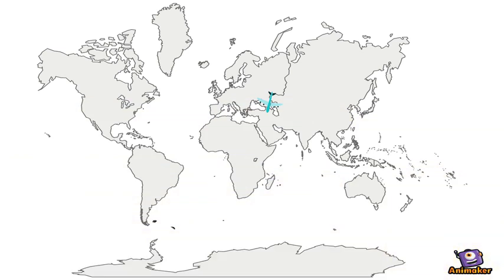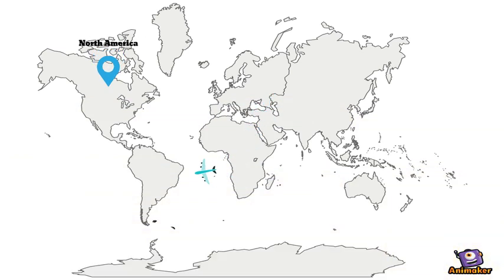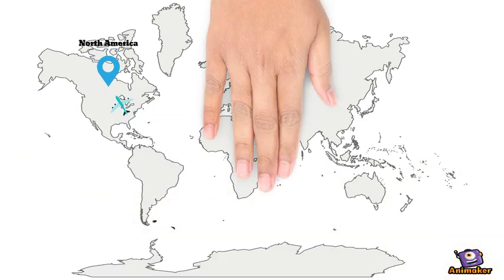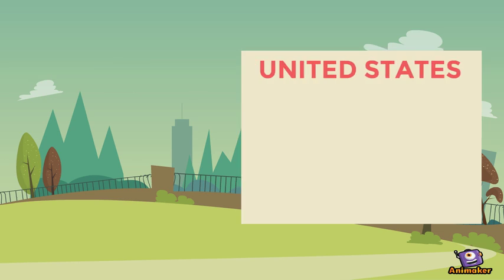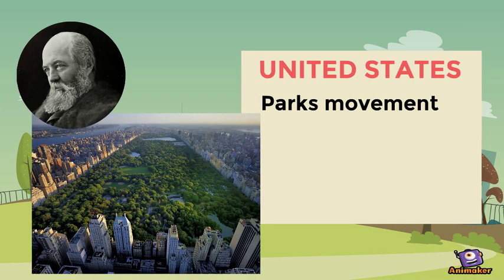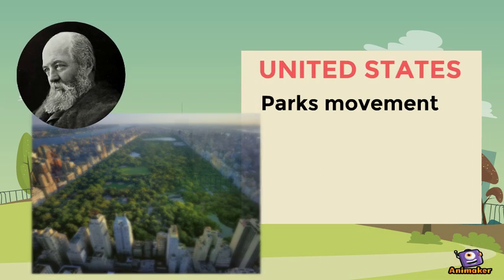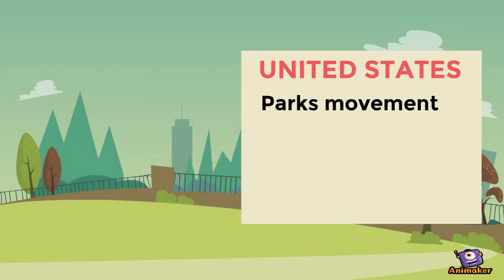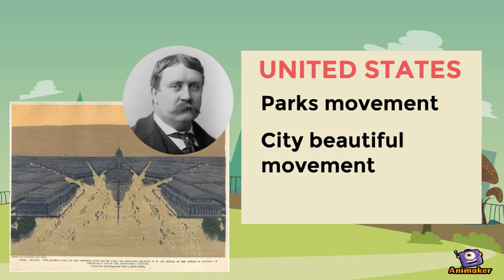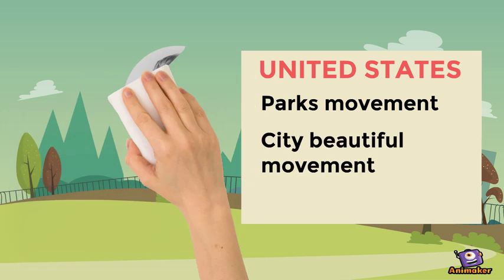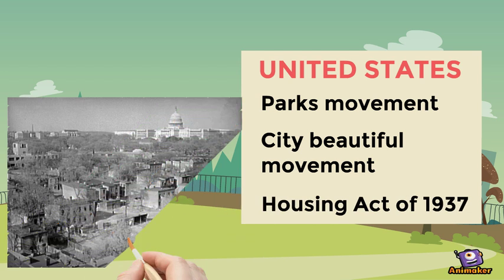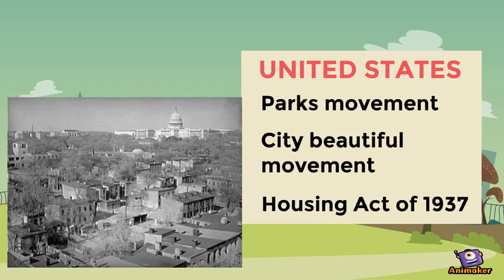The U.S. was among the first countries to develop specific programs of urban renewal, which transformed urban centers by the creation of public parks and monumental public buildings. The Housing Act of 1937 was enacted to improve living conditions of low-income families.